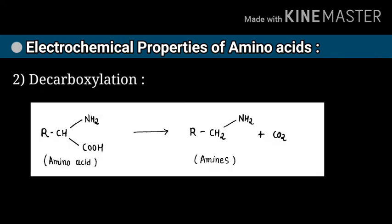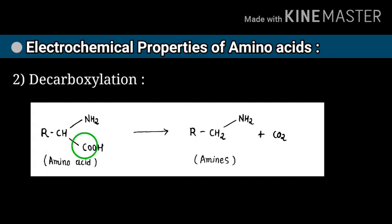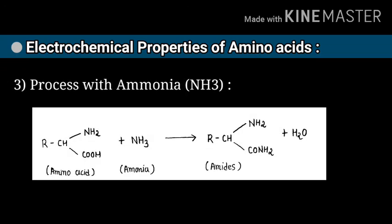Let us discuss the second property: decarboxylation. The name indicates removal of CO2 (carbon dioxide). The same rule applies — the reaction forms on the carboxyl group of amino acids. In this reaction, one carbon and two oxygens combine and form CO2, which is removed, and the product is an amine plus CO2. Here you see COO forms CO2 and the remaining H combines with the chiral carbon.